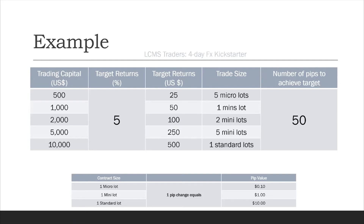You shouldn't trade bigger than your trading capital allows. After this session, start thinking about what capital size you'll be trading with, what targets you'll aim for, what trade size that translates to, and what pips per month you'll try to achieve. Working through this, you'll realize you're not looking for a lot of pips per month — which means you don't have to overtrade, take on more risk than you should, and you can stick to a strategy. Take time to learn, practice, review, ask questions, and have a coach to guide you through the process.